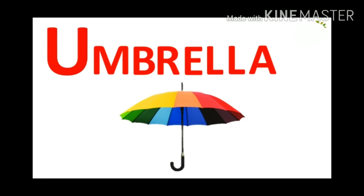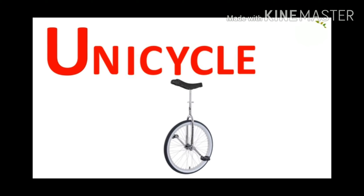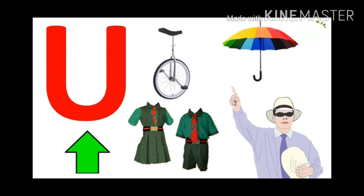After T, letter U. This is the letter U. U for Up. U for Umbrella. U for Umpire. U for Uniform. U for Unicycle. Letter U has the sound U.